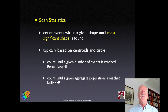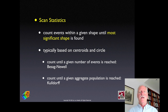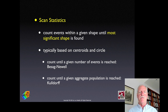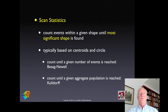Scan statistics count events and increase the size of the shape until reaching a stopping point — specifically the most significant shape. The typical approach uses a circle centered on the centroid, though there are many generalizations. The two main approaches are Bissack-Newell and Kulldorff; the Kulldorff is the better known of the two, and they use different criteria for the stopping point.